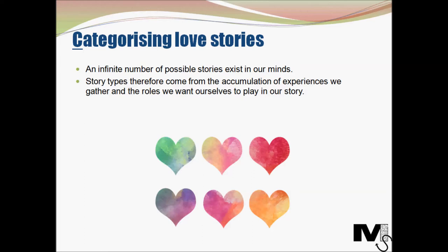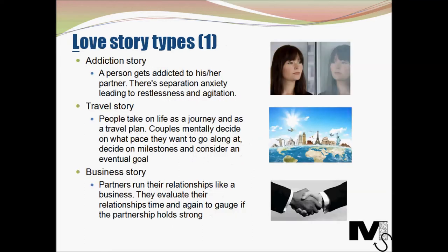We're going to cover 12 story types, starting with the addiction story. In this type of story, a person gets addicted to his or her partner such that even temporary separation can actually cause withdrawal symptoms. There is a type of separation anxiety leading to restlessness and agitation, even if the partner is not around or doing other things for a short amount of time. In such relationships, the other partner who is not following this story can sometimes feel strangled, despite having no dearth of love in the relationship.